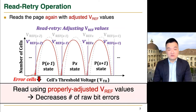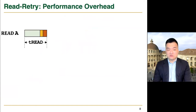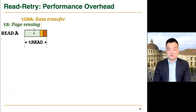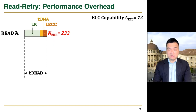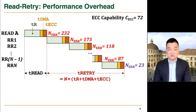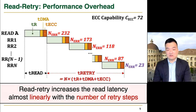As shown in the figure, doing so significantly reduces the number of raw bit errors in reading the page. Unfortunately, read retry also significantly increases the read latency. Reading a page consists of three steps: page sensing at the chip, data transfer from the chip to the flash controller, and ECC decoding at the flash controller. If the number of bit errors is lower than the ECC correction capability, the read request can be returned immediately after ECC decoding. However, when the number of raw bit errors is higher than the ECC correction capability, the flash controller performs multiple retry steps until it reduces the number of bit errors below the ECC capability. This in turn increases the read latency almost linearly with the number of retry steps.